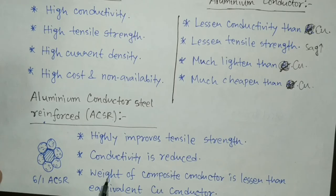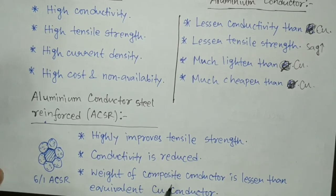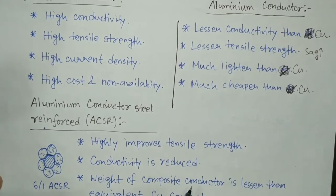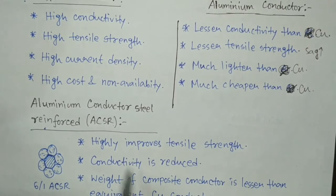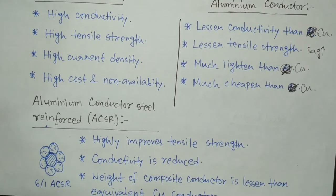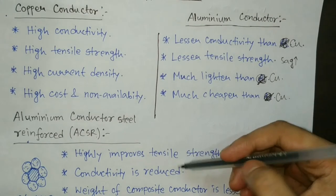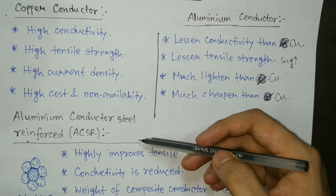One more thing people may think is that by introducing steel, the overall weight may increase. But that is not the case — the weight of the composite conductor is actually lesser than the equivalent copper conductor. It has been found that even with the steel reinforcement, the overall weight of the composite conductor is still less than the equivalent copper conductor.